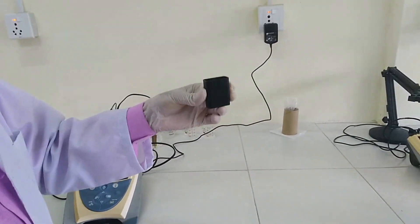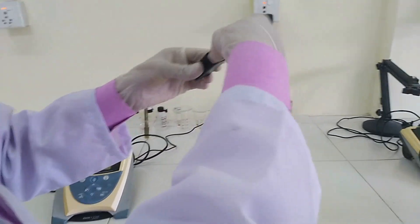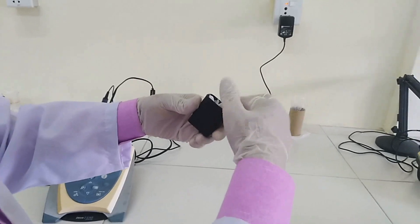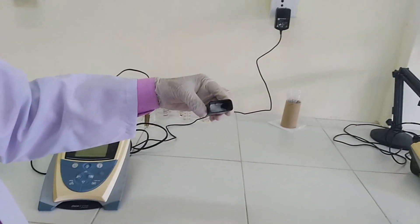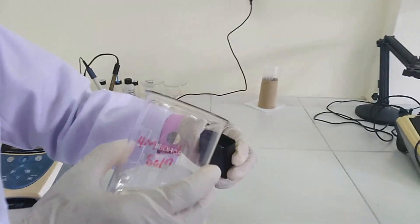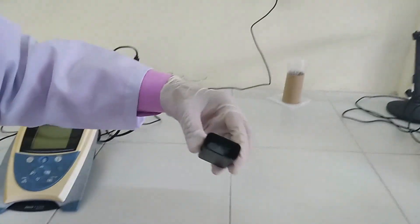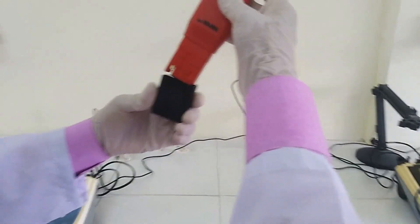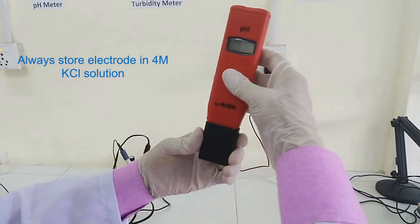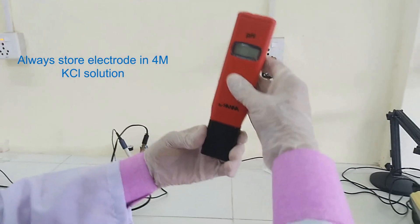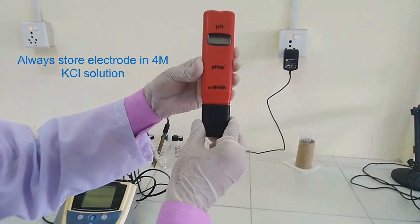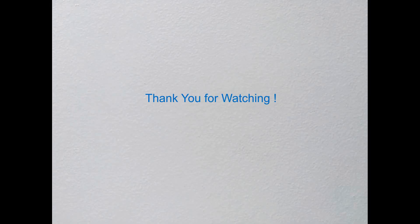Never store the pH meter dry. So take a small piece of DC paper in cap, wet it by 4 molar potassium chloride storage solution and insert the instrument in cap and store. Thank you for watching.